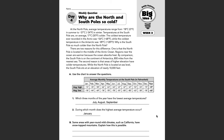Part B: some areas with year-round mild climates, such as California, have snow-topped mountains. Explain how this is possible. Well, we know mountains are at higher elevation, and we see right here that areas of higher elevation have colder temperatures.